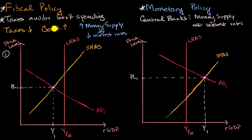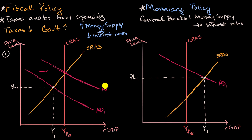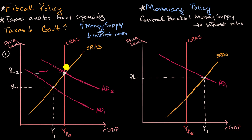So with this expansionary fiscal and monetary policy, you might get to a situation where aggregate demand gets shifted enough — that's aggregate demand curve two — where now our equilibrium level of output is at full employment output, and our price level has gone up. And generally speaking, expansionary policy, whether fiscal or monetary, is going to see the price level go up.